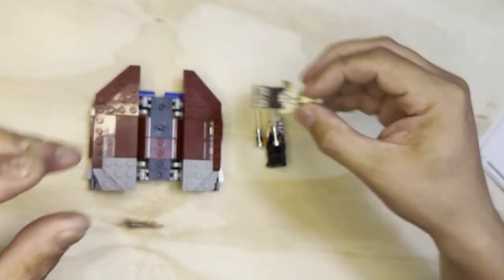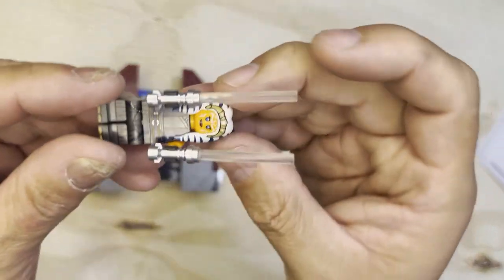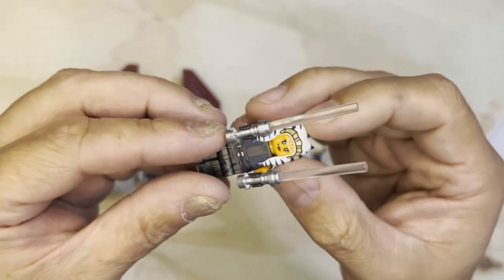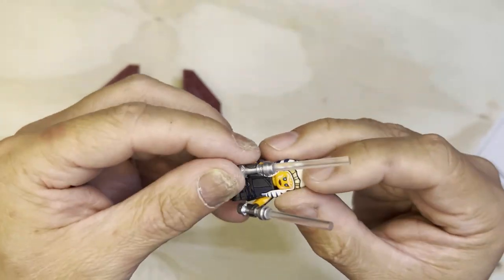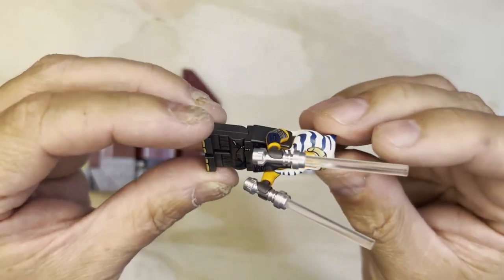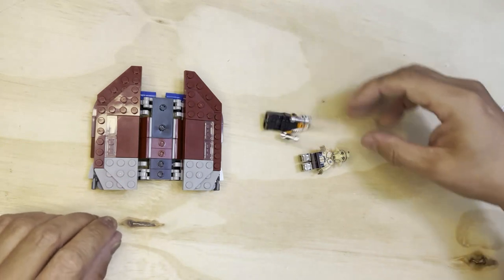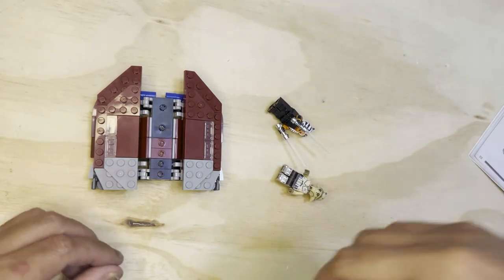And then this is Ahsoka Tano, and she's got her two lightsabers here that she will battle with. Lots of good detail on this particular minifigure. And there you go.